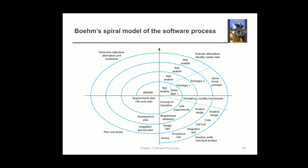Then we go for product design. Once product design is done, we go for design verification and validation — whatever the product we designed is validated here. Then we go for the integration and test plan, carried out in the bottom left quadrant. Once that is done, we again look for any requirements being added, alternatives and constraints, then risk analysis again. Then we have an overall operational prototype. Once done, we go for detailed design, coding, unit testing, integration testing, acceptance testing, and service — once everything is accepted by the customer, we deliver it as a service to the client.